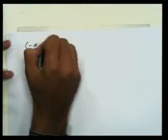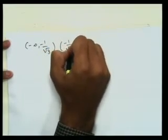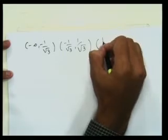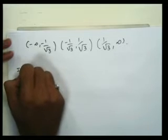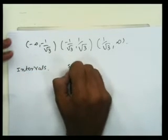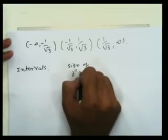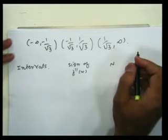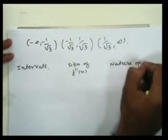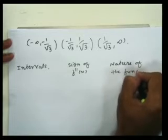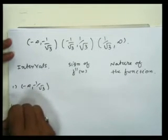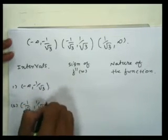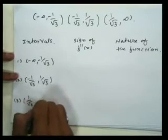We have two points ±1/√3, so they create three intervals: (-∞, -1/√3), (-1/√3, 1/√3), and (1/√3, ∞). Let us make a table for these three intervals.